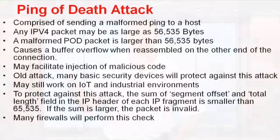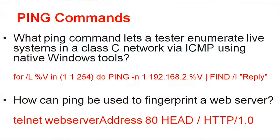A ping of death packet is larger than 65,535 bytes and causes a buffer overflow when reassembled on the other end. Buffer overflows were common in the past but have been largely remedied today, so it's not a very useful attack now. It may facilitate injection of malicious code. To protect against it, firewalls check that the sum of the segment offset and total length field in the IP header of each fragment is smaller than 65,535 — if larger, the packet is invalid.